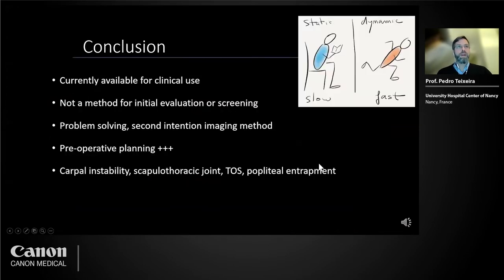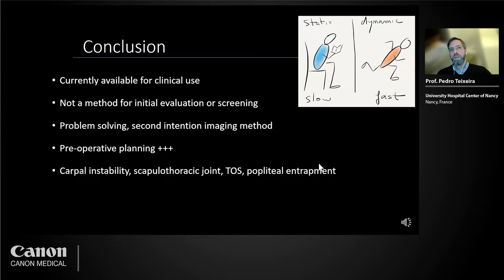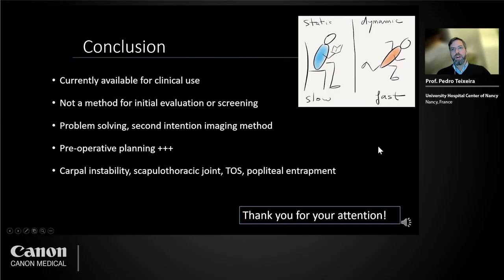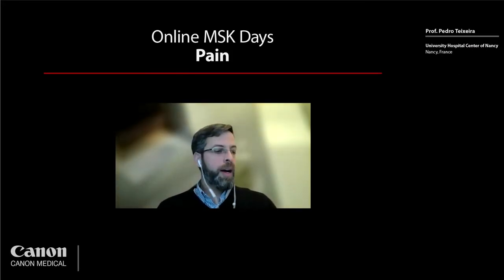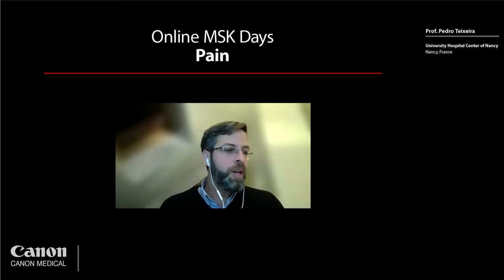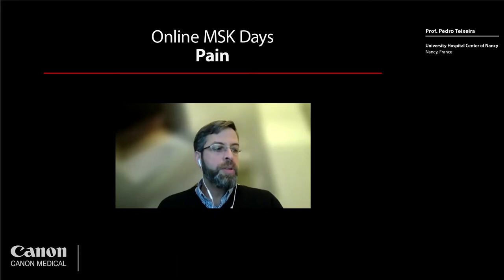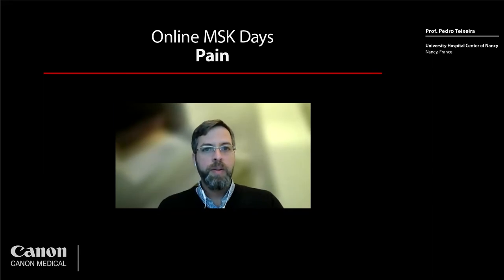In summary, 4DCT and dynamic CT angiography are available for clinical use. They are not methods for initial evaluation or screening, but rather problem-solving tools for second-intention imaging. They are very useful for pre-operative planning, carpal instability, scapulothoracic joint assessment, thoracic outlet syndrome, and popliteal entrapment syndrome. I'll now introduce Dr. Verizer from the Netherlands, who will talk about high-resolution MRI and the diagnosis of wrist pain.